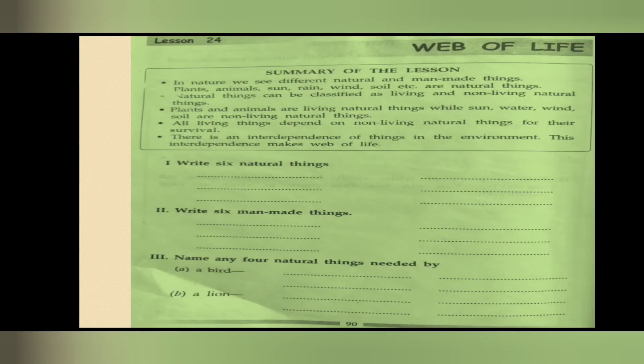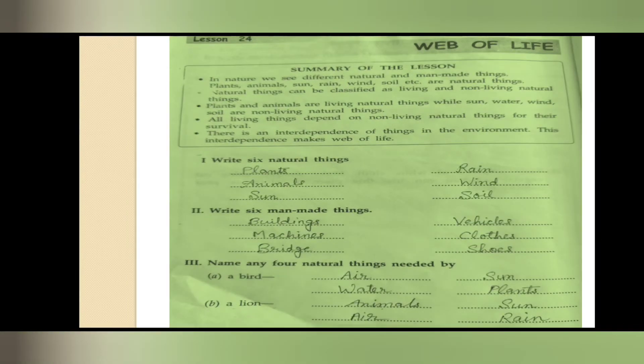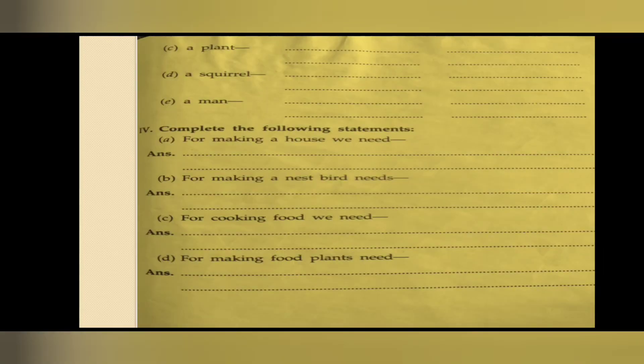Like bridges, transport, wickers, houses, machines - a lot more you can write on your own. Name any four natural things needed by birds, lions, and others. Think about what things birds need, what things lions need, and write them down. Although I have done it for you - like a bird needs air, water, sun, plants. What natural things do they need? Then for plants, for squirrels, for man, you will fill all this.